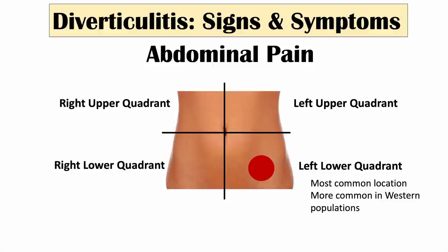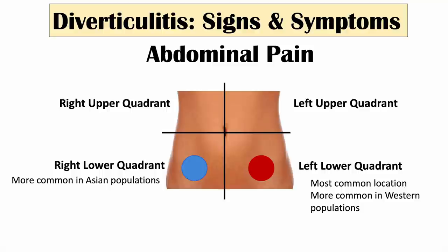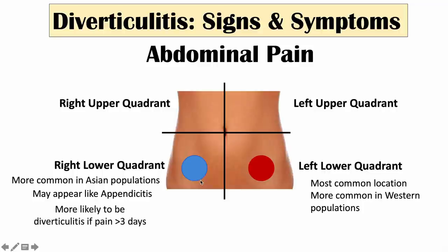Interestingly, left lower quadrant pain is more common in Western populations. We can also see right lower quadrant pain in diverticulitis, but this is more commonly seen in Asian populations. Right lower quadrant pain may appear like appendicitis — your appendix is located there as well — but it's more likely to be diverticulitis if the pain is lasting more than three days.